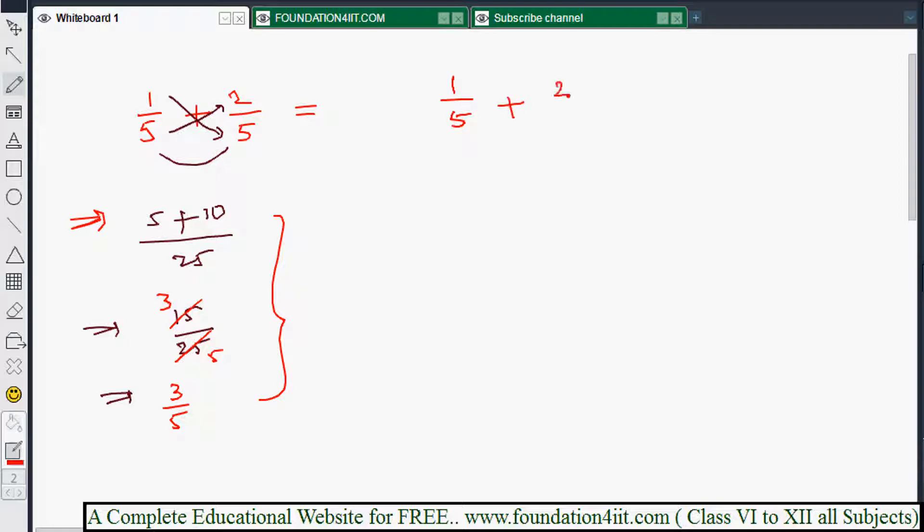So the method is: whenever denominators are same, that means it's also 5. 1 by 5 plus 2 by 5, that means both numerators will add directly first. 1 plus 2, you can add, that is 3.